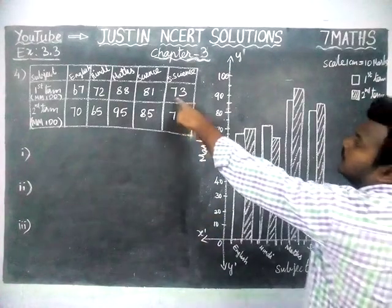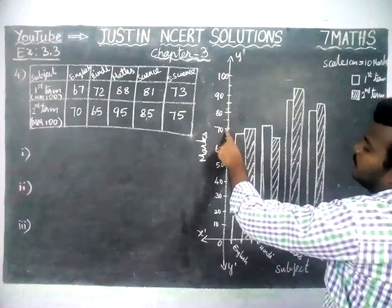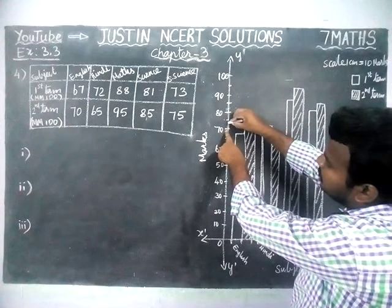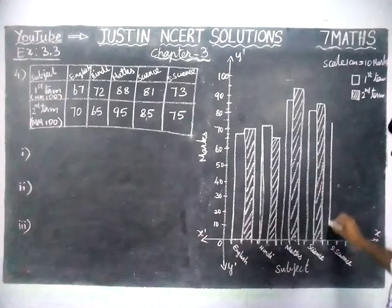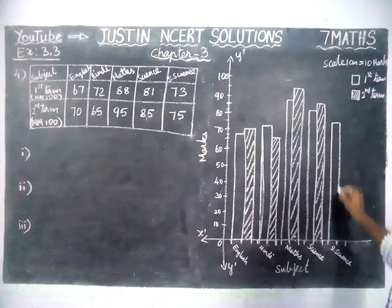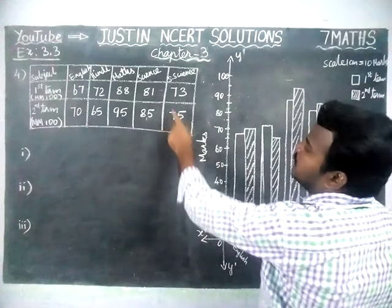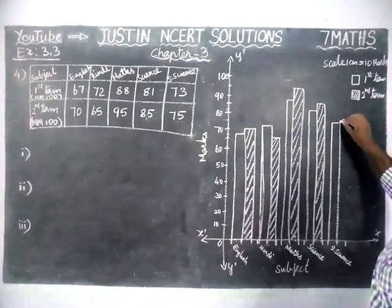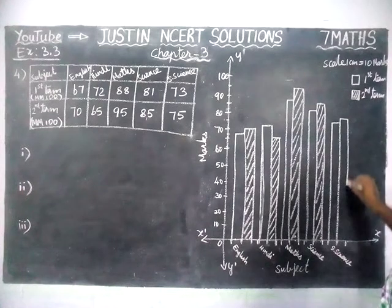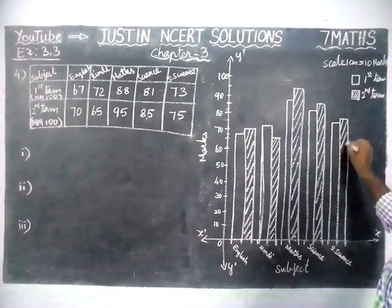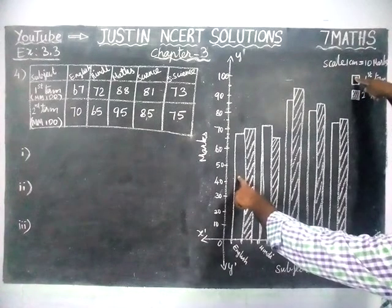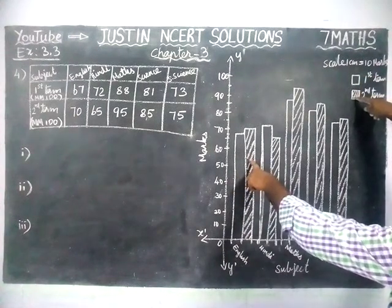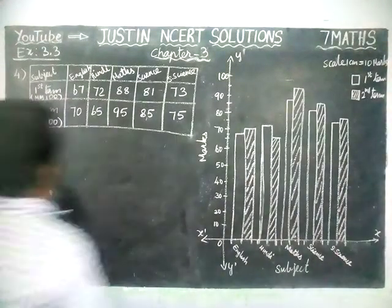For social science, first term has 73 marks. 70 is here; after 70, count 1, 2, 3 — that point is 73. We draw the bar for 73 in first term. Then for second term, 75 — two marks extra. We differentiate using cross lines. We have completed the double bar graph. The unshaded portion is first term and the cross-hatched portion is second term marks.